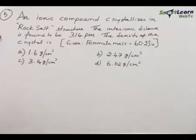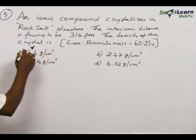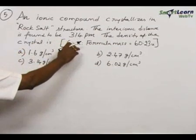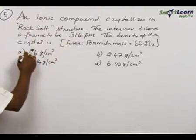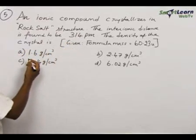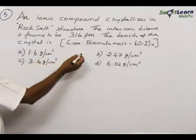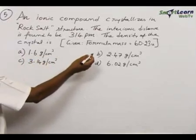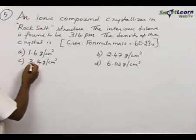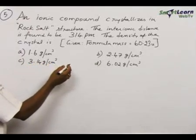Problem number 5: an ionic compound crystallizes in rock salt structure. The inter-ionic distance is found to be 314 pm. The density of the crystal is to be found, given formula mass is 60.23. The options are: a) 1.6 g/cm³, b) 2.47 g/cm³, c) 3.14 g/cm³, and d) 6.02 g/cm³.